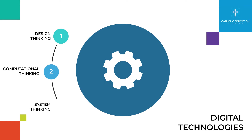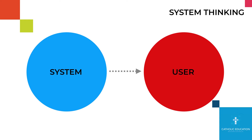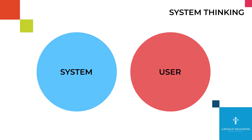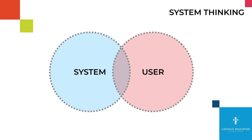So when we think about the system, if you're going to Google this, you'll find that there may be different sorts of variations for system thinking. But really what we're concerned about is the system and how the user interacts with that system.